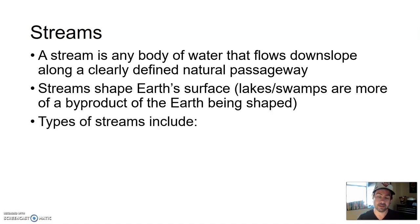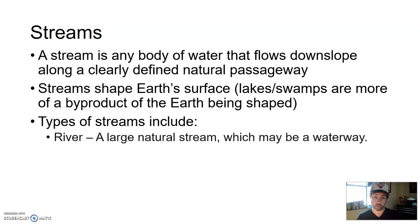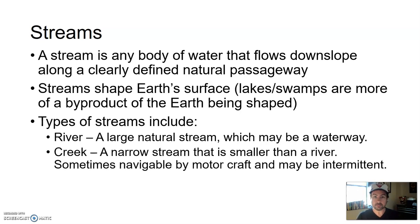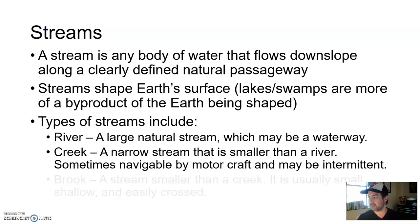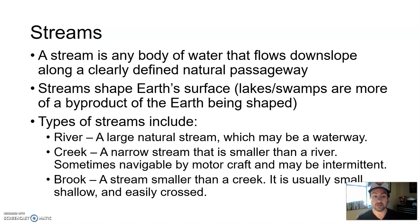There are different types of streams — three categories. Rivers are large natural streams, which may also be a waterway for moving materials. Creeks are narrower streams, smaller than a river, sometimes navigable by small motorboats, and may be intermittent — there may or may not be water. Brooks are the smallest, smaller than a creek, usually small and shallow, and easily crossed.